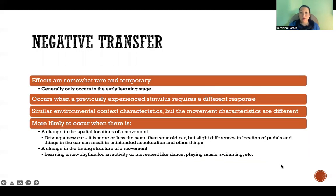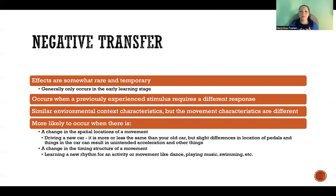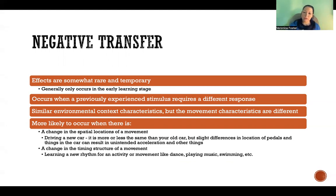Negative transfer is where past skills might interfere with learning a new skill. For example, in tennis you generally keep your wrist stiff when you hit the ball, but in badminton you snap your wrist. There might be negative transfer where the habit from tennis interferes with learning badminton, and vice versa. Thankfully, negative transfer is temporary — it doesn't happen that often. The skills have to be very similar, and even when it does happen, the effects are temporary, generally only occurring in the early learning stage and overcome with practice.